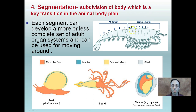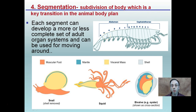Segmentation — subdivisions of the body — is another key transition in the animal body plan. Each segment can develop a more or less complete set of adult organ systems and can be used for moving around. The more segments an animal has, the greater the potential for specialization and more efficient movement. This is considered an advancement in the development of the body plan versus something very basic — more segments means more chance for specialization.